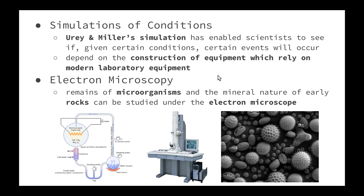Then we have the development of the electron microscope. Electron microscopy has been another useful source of information about early life forms. Remains of microorganisms and the mineral nature of early rocks can be studied under the electron microscope. The nature of the minerals gives clues to the environment, and the structure of the organisms reflects how they might have survived in their environment.